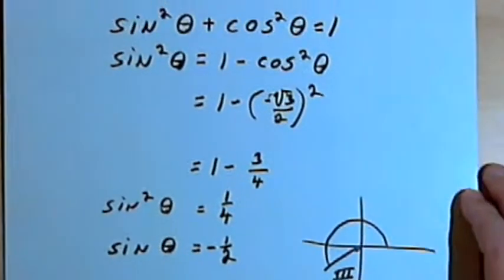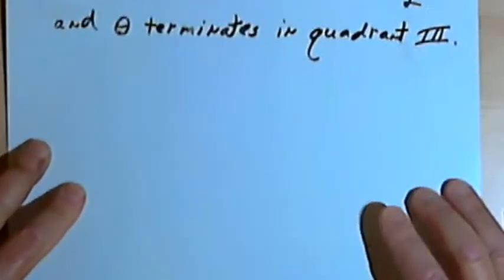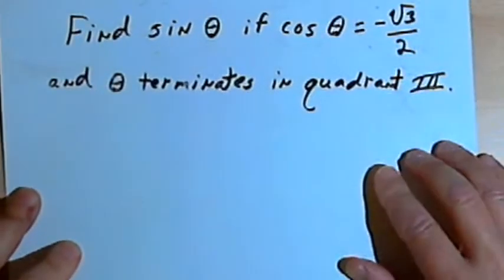Pay attention to the quadrant that your angle terminates in — that will tell you whether your function ends up being positive or negative. Let's try another one with tangents and secants.